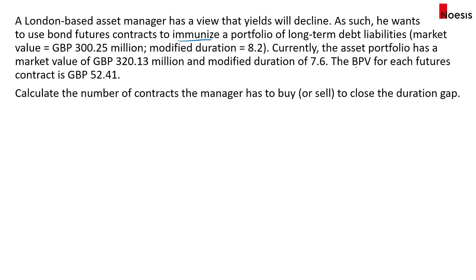The basis point value for each futures contract is £52.41. We need to calculate the number of contracts the manager has to buy or sell to close the duration gap between the assets and liabilities. To do this, we'll use the equation that links the asset BPV to the liability BPV: Asset BPV plus the hedge BPV (futures BPV) equals the liabilities BPV.